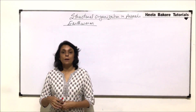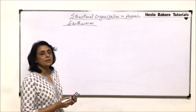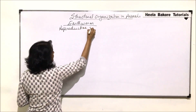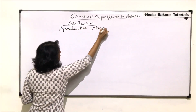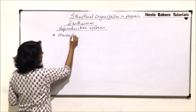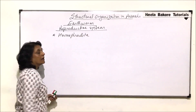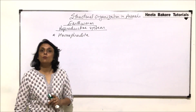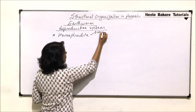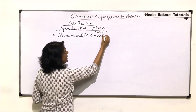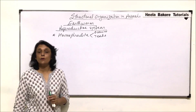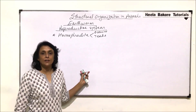In this part, we will be talking about the reproductive system in earthworms. Earthworms are hermaphrodite. That means one worm has both male and female reproductive organs. So there are ovaries and testes in the same worm. Such organisms are known as hermaphrodite, but they show cross fertilization.